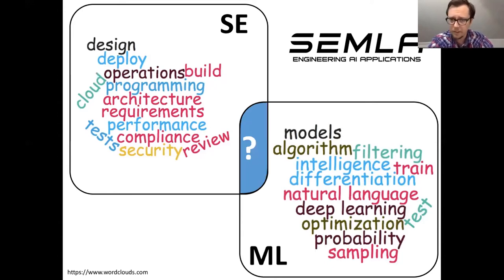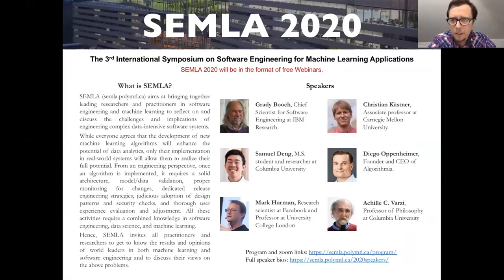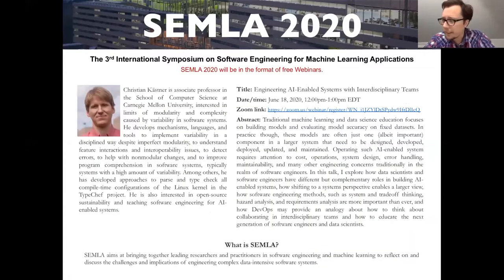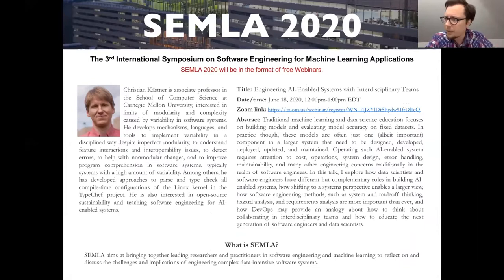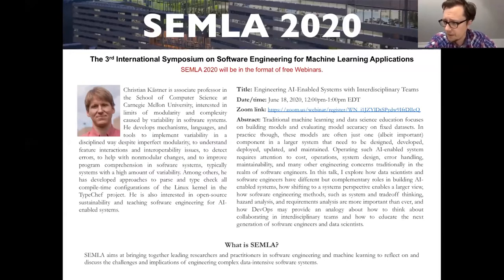The question is how to do that — where is the intersection, how do you combine these roles together? The past two years we've been exploring this with speakers from different companies, universities, and so on, and this year we continue this idea. We have six webinars scheduled. Today we have the pleasure of having Christian Kessner as a speaker. Christian is an associate professor at Carnegie Mellon, director of a PhD program on software engineering, and has been working a long time on software variability. He's also very interested in software ecosystems and in teaching how to build AI systems using real and high-quality software engineering practices.